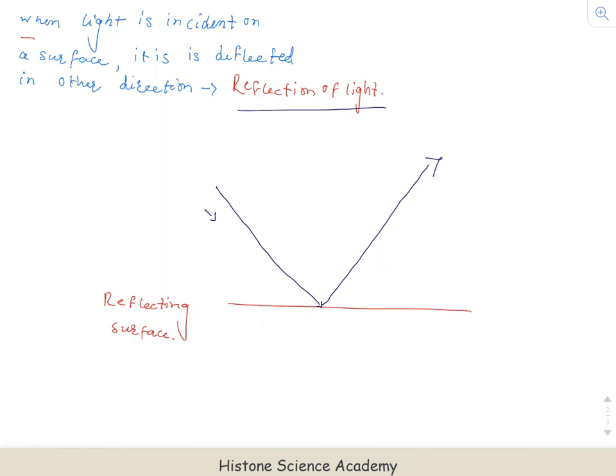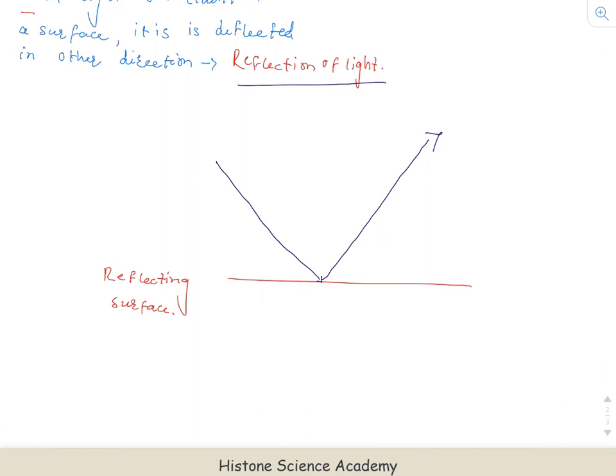This is a simple example that you have seen or played with as a child. When you take a mirror and shine light onto the ground, you will see the reflection of light on the ground. And when you move your wrist, you will see that the reflection of light on the ground moves exactly with it. When light is incident on a surface, the surface reflects it, and the direction of light changes. This phenomenon we call reflection of light.